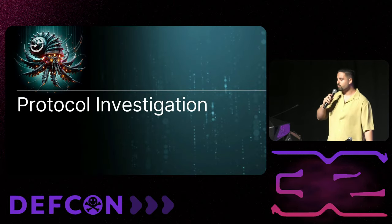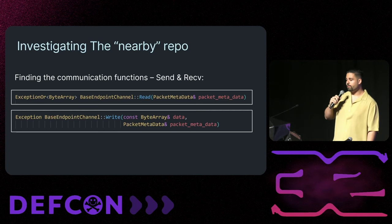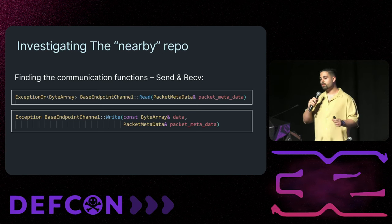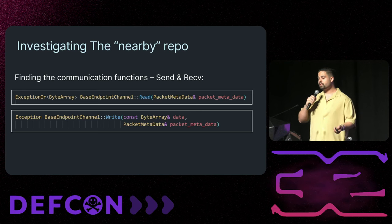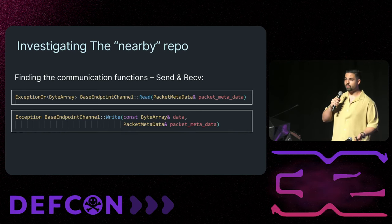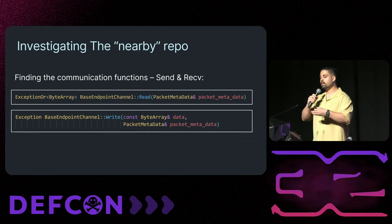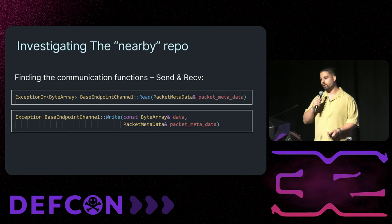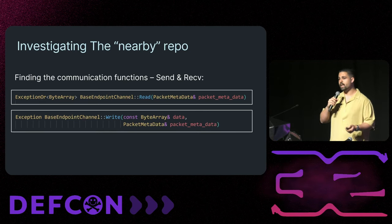To start our journey we needed to understand which protocol QuickShare uses. The first thing we did was find the most basic functions that QuickShare uses to send and receive packets. Once we found such functions — if they are generic and used for all communication methods — we'd get a clear view of all packets being sent and received in binary form. We found the read and write functions as part of a base class called BaseEndpointChannel.